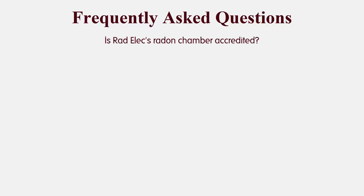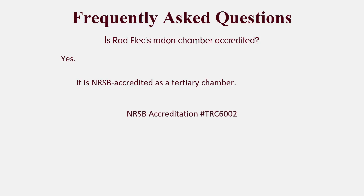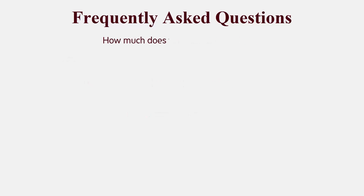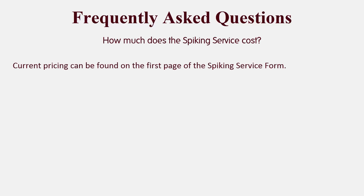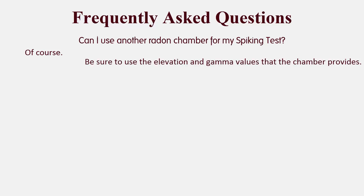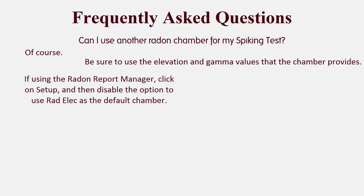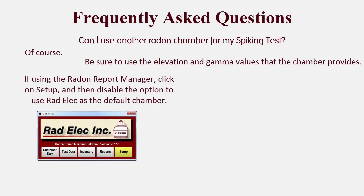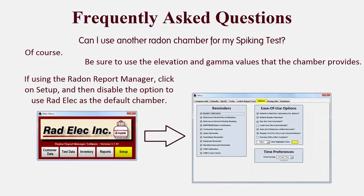Is Radelec's radon chamber accredited? Yes — it is NRSB accredited as a tertiary chamber, with accreditation ID TRC6002. How much does the spiking service cost? Current pricing can be found on the first page of the spiking service form. Can I use another radon chamber for my spiking test? Of course — just be sure to use the elevation and gamma values that that chamber provides. If you're using the Radon Report Manager, click on Setup and then disable the option to use Radelec as the default chamber, which will prevent Radelec's information from appearing on the test record whenever you select the spiking protocol.